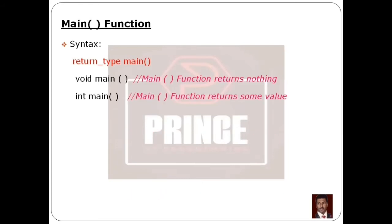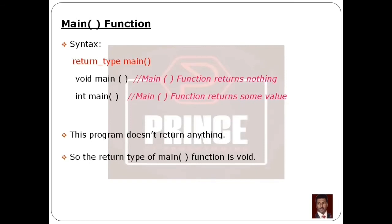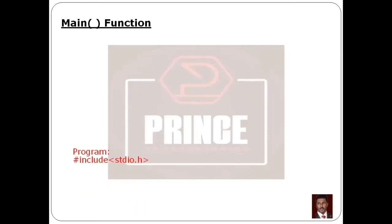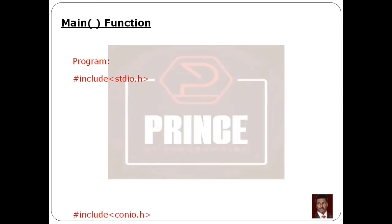If there is a return type, we need to create it accordingly. In this program, the main function uses the void keyword. So the return type is void. The syntax is: void main with parentheses. Then at the beginning of the main function, we use a left curly brace. The preprocessor section has two lines: hash include stdio.h and hash include conio.h.